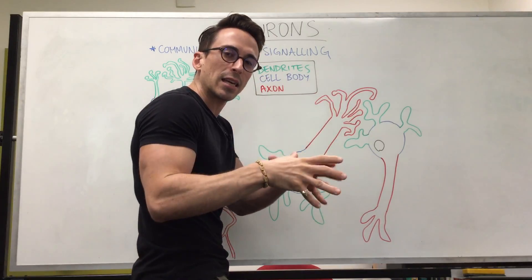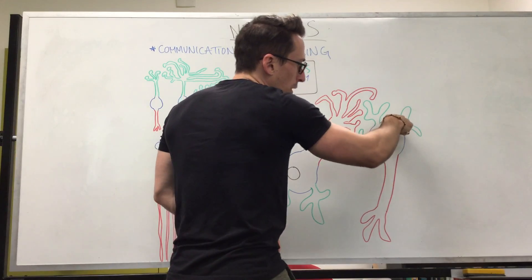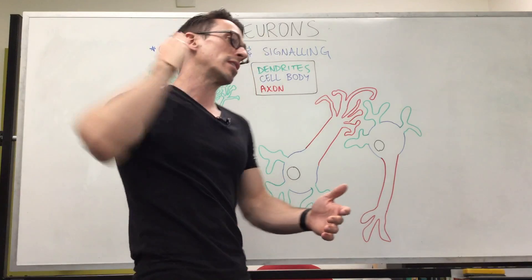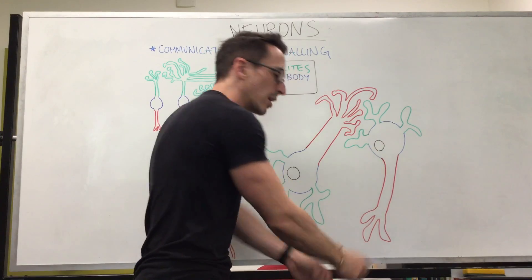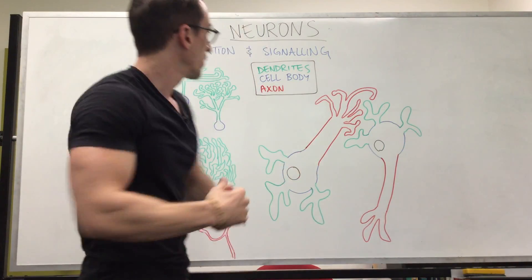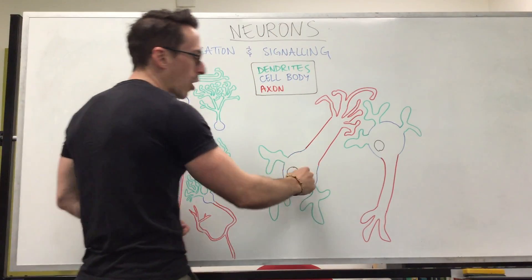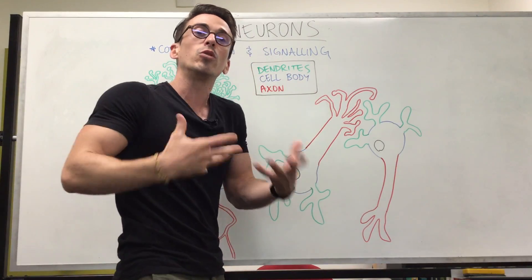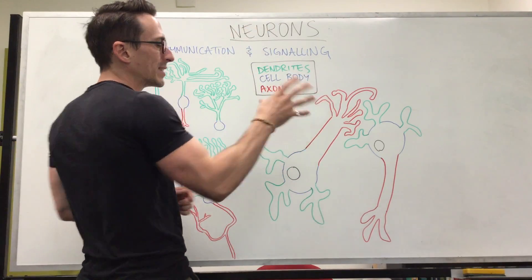Once neurotransmitters bind to the dendrites or cell body, it generates an electrical signal. This signal begins at the axon hillock — the area where the cell body meets the axon — and then it pushes the signal down through the axon. The axon is the highway; it is simply the site where the signal gets sent all the way to the axon terminals, where it then releases neurotransmitters to speak to the next neuron. The cell body contains the nucleus, ribosomes, rough and smooth endoplasmic reticulum, Golgi apparatus, mitochondria — all the things you'd usually find within a cell of the body. And the axon is the highway to send the signal.